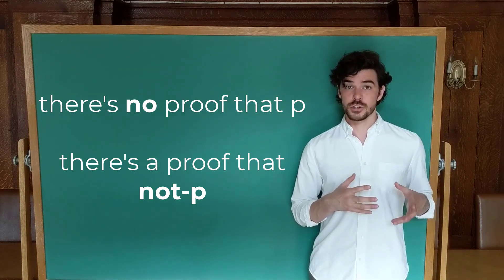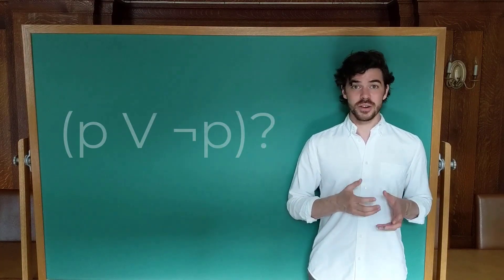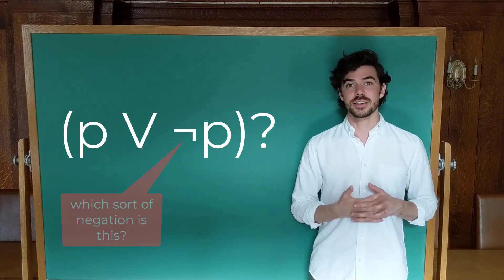Reading these assertions in the stronger sense gives us two kinds of negation, but then the whole thing of excluded middle kind of falls apart because you're not saying that it's true or not.